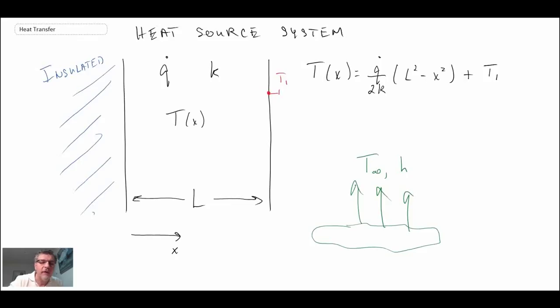So what we're now going to do is pick some typical values that you may have for a wall with heat generation. One area where heat generation often occurs is the curing of concrete. When you pour concrete it cures and the curing process is exothermic.